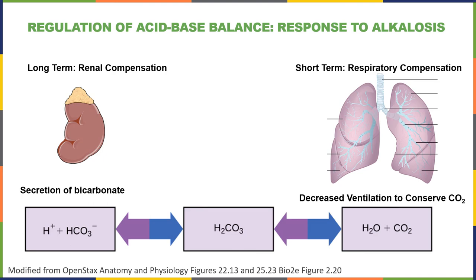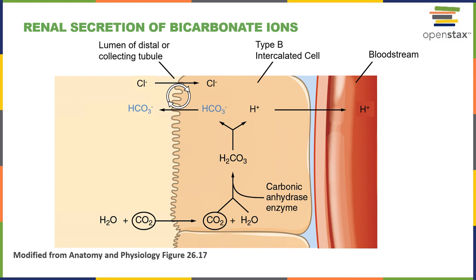This illustration shows the mechanism of secretion of bicarbonate ions that occurs in the distal convoluted tubule and collecting duct in the kidneys, where bicarbonate ions are secreted by a bicarbonate-chloride antiporter protein. Meanwhile, hydrogen ions are reabsorbed in this mechanism. This works to decrease the blood pH as a long-term response to help restore homeostasis in response to alkalosis.